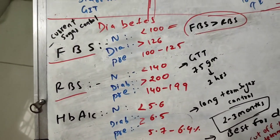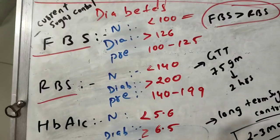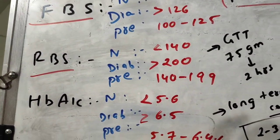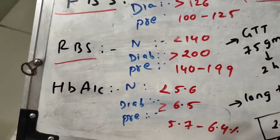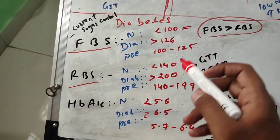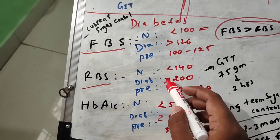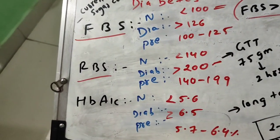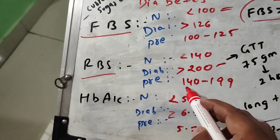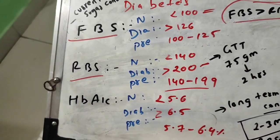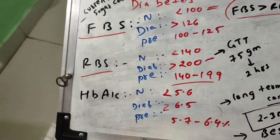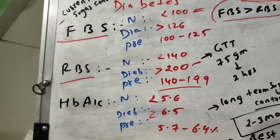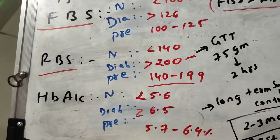For RBS (Random Blood Sugar), normal is less than 140. If it is more than 200, the patient is diabetic. Pre-diabetic is between 140 to 199.